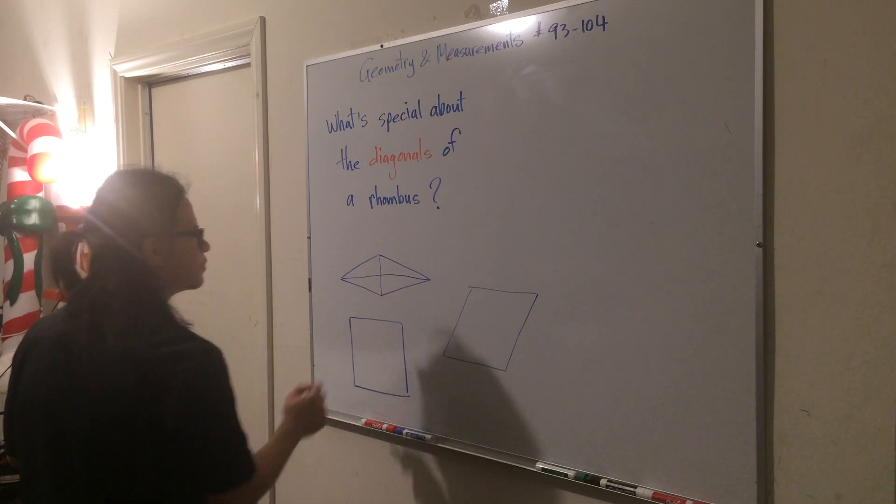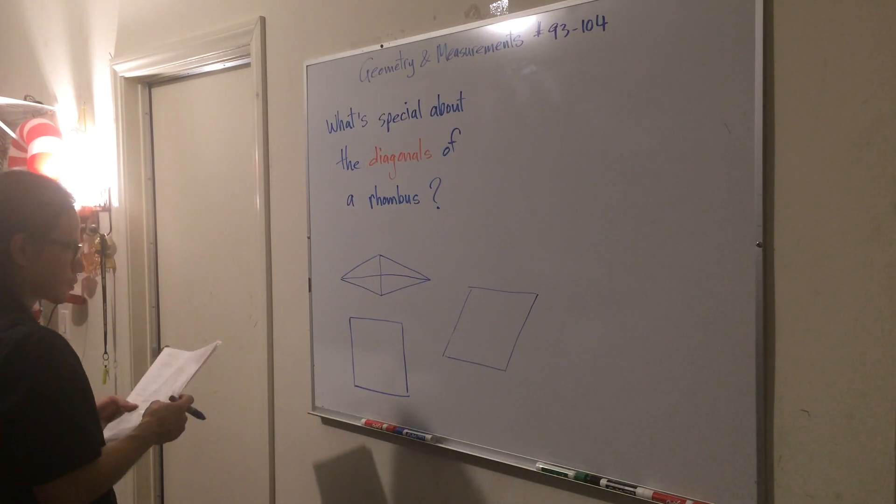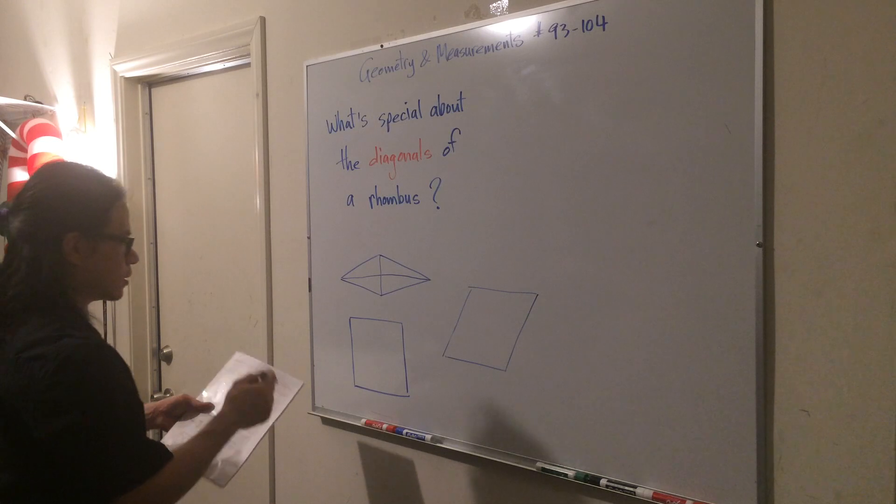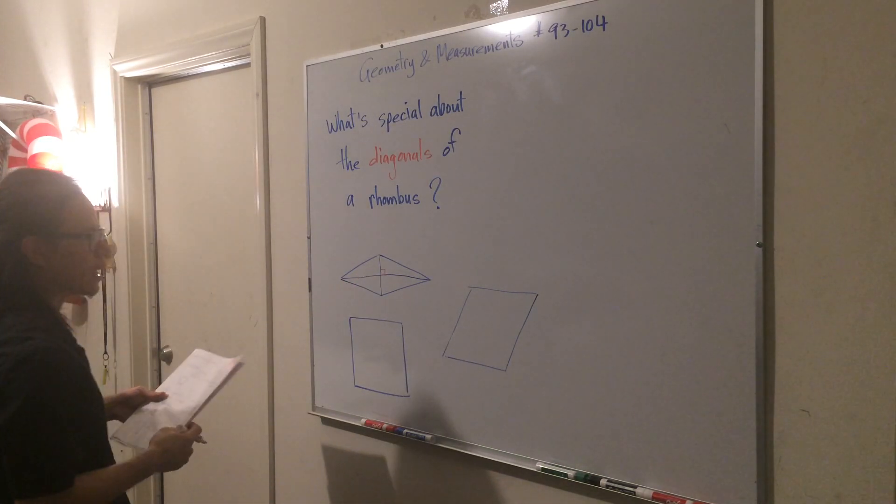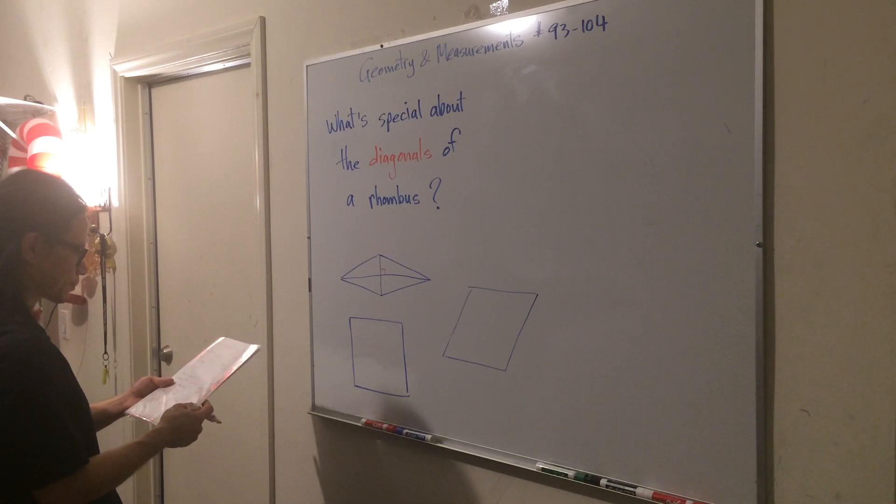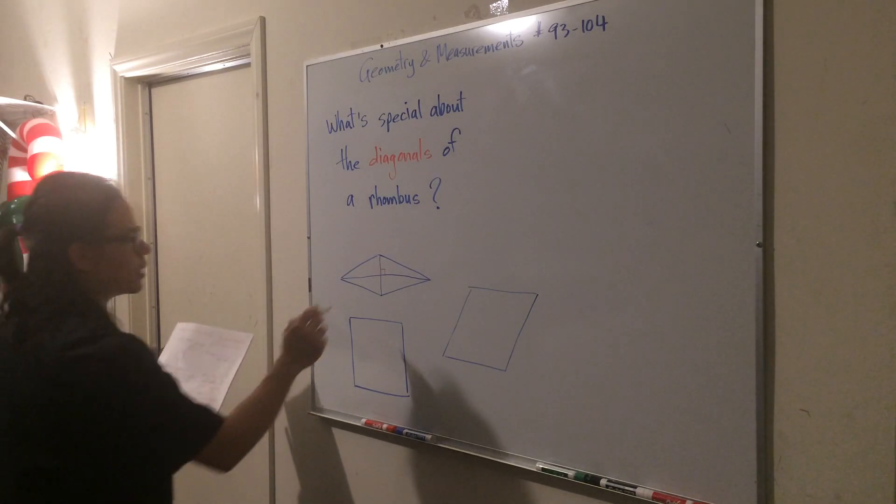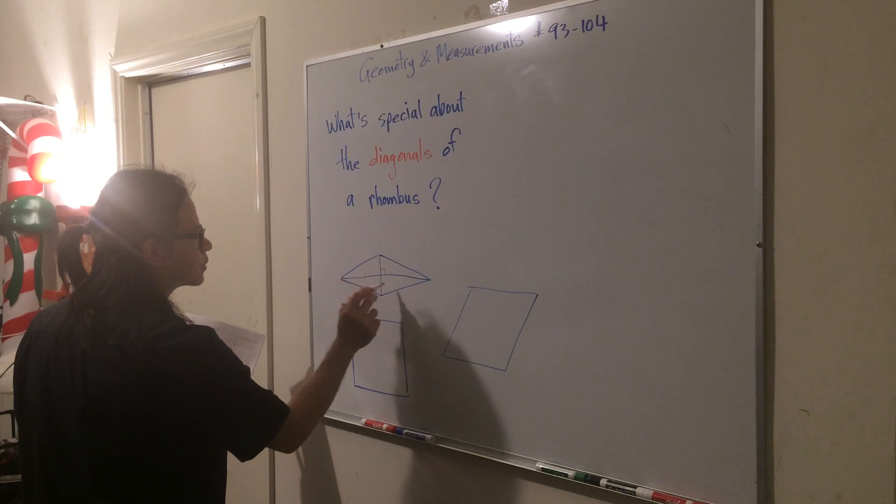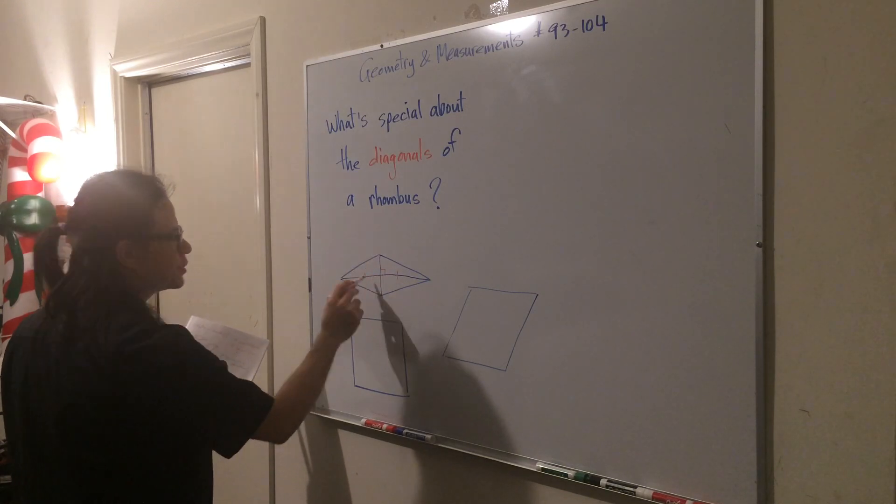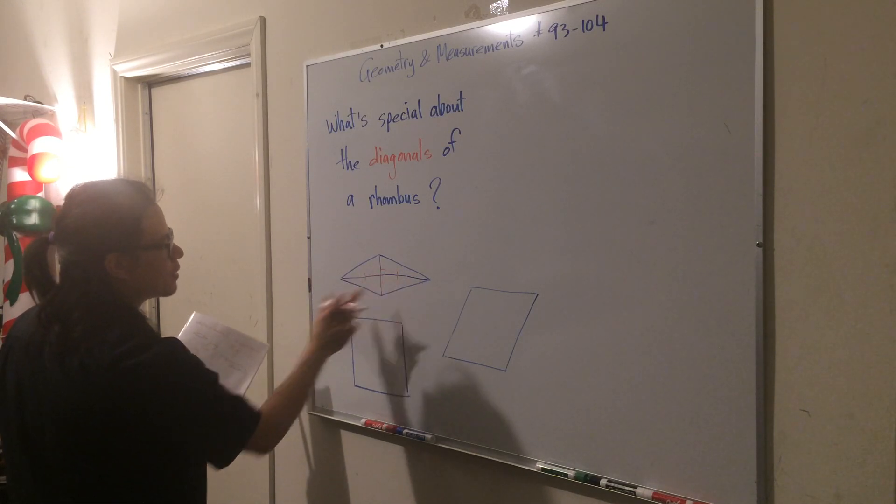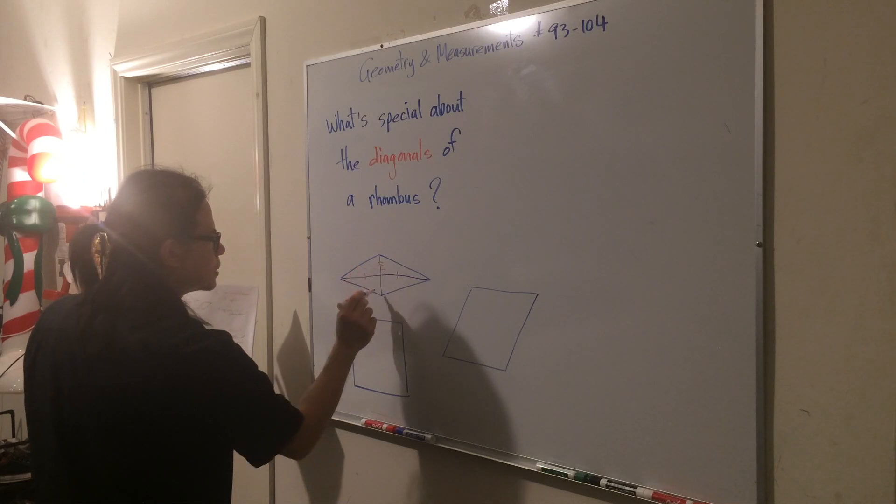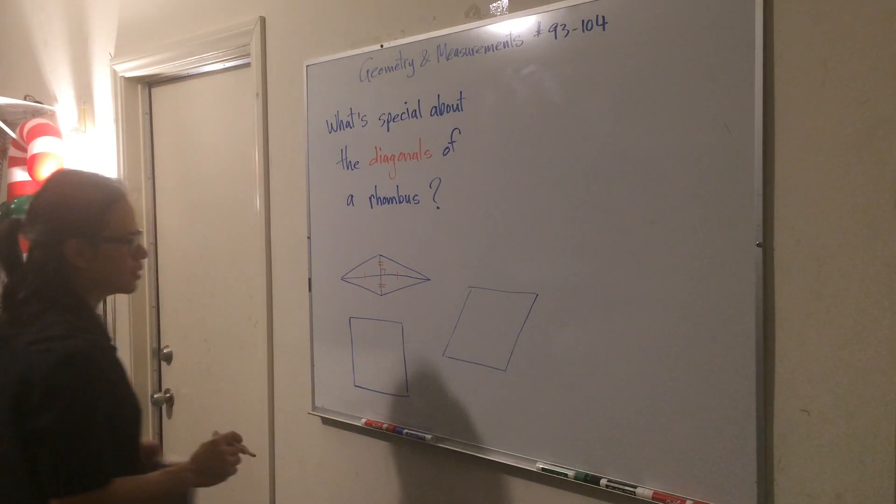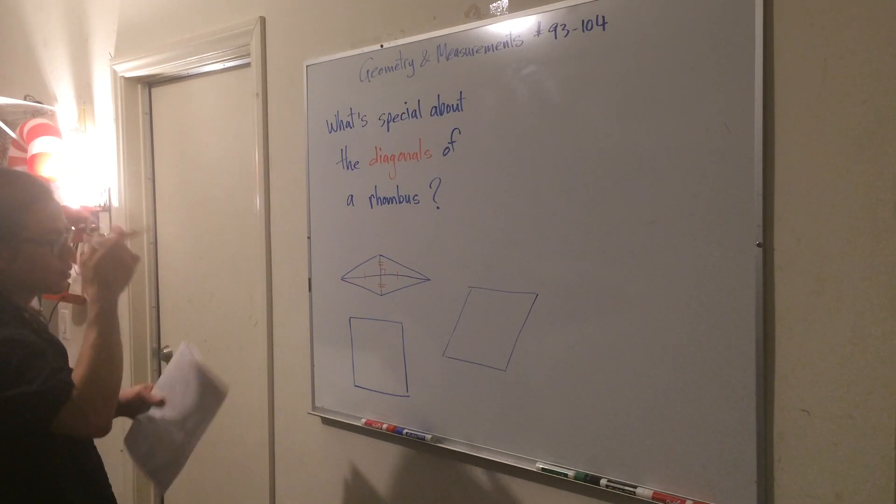These are the diagonals of a rhombus. You're going to find out that they form right angles here, 90 degrees, and then they also bisect each other. So this diagonal would divide these two sides up in half. This segment here will be the same length as this segment here. So let's put it on paper.